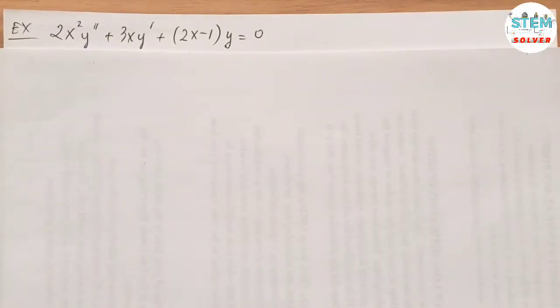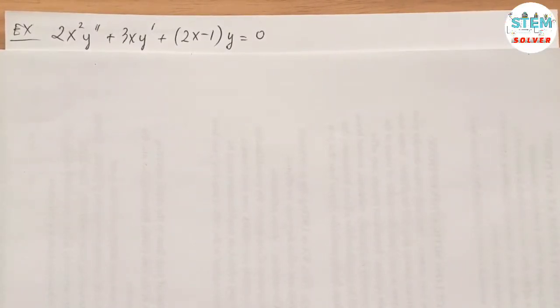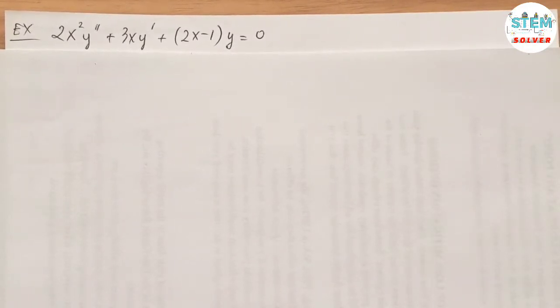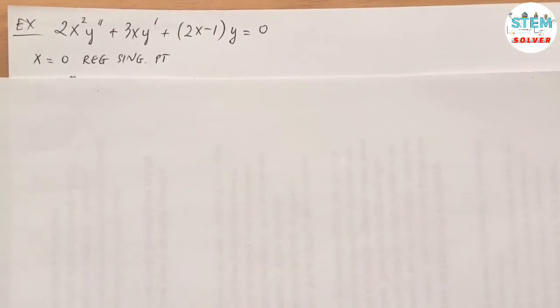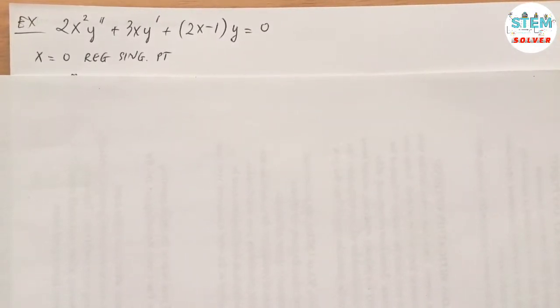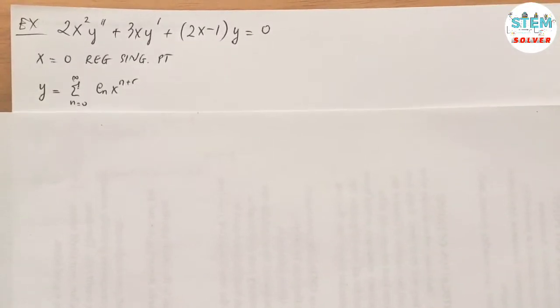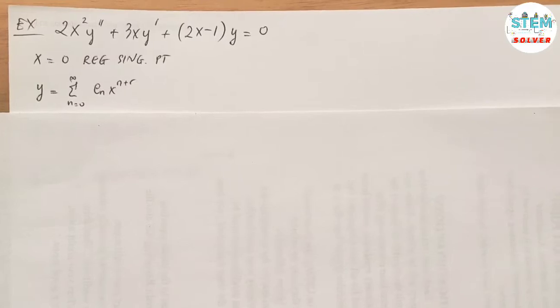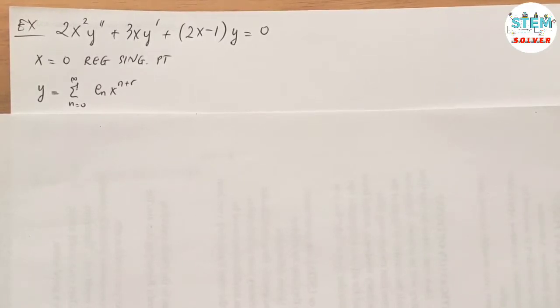Using power series to solve a homogeneous differential equation: 2x² y″ + 3xy′ + (2x − 1)y = 0. You are given that x = 0 is a regular singular point, so our solution is given in the form y = Σ from 0 to ∞ of cₙ xⁿ⁺ʳ.